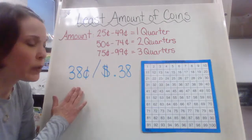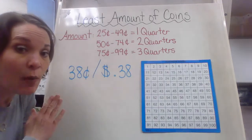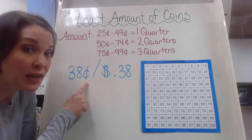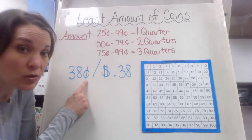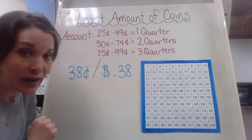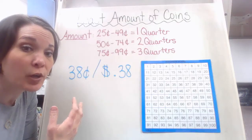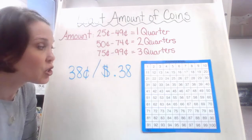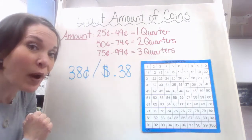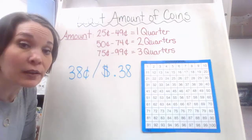So we're going to start with the amount 38 cents. When you see 38 cents, notice how I have it written two different ways on my board — with a simple cent sign, which goes after the amount, and then with a dollar sign and a decimal point. The dollar sign and decimal point will be especially useful when you start incorporating dollars — it's a more grown-up way to write 38 cents.